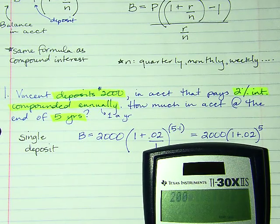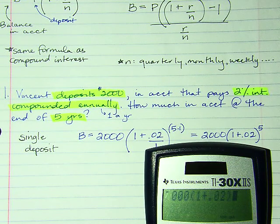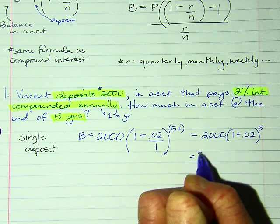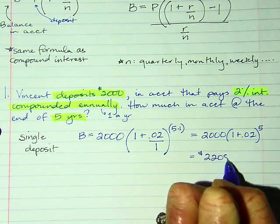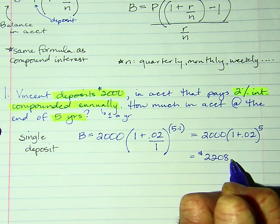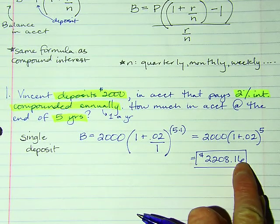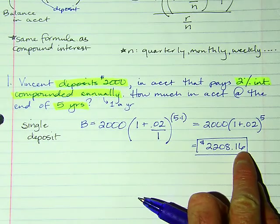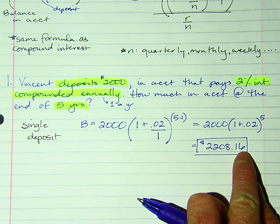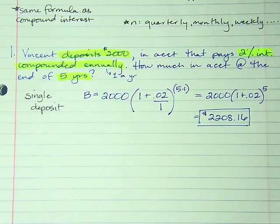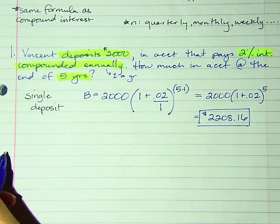So: 2,000 × (1.02)^5, and that gives me $2,208.16. When it says round to the nearest cent, that means you can have cents — like 16 cents. Some of you are rounding to the nearest dollar, which means you aren't paying attention to where you should be rounding.